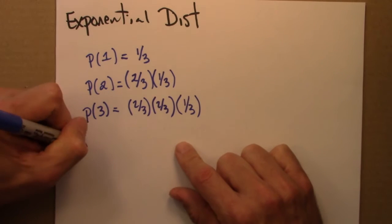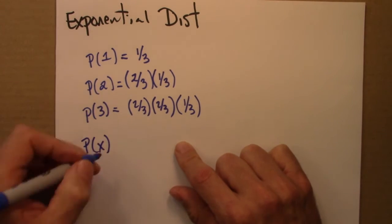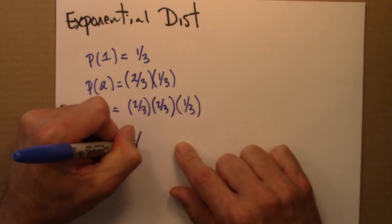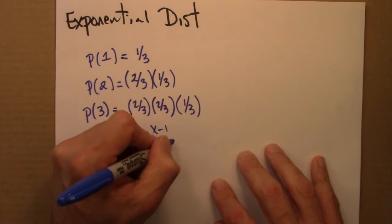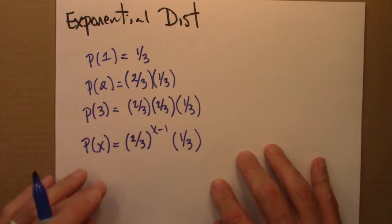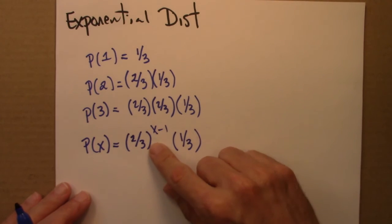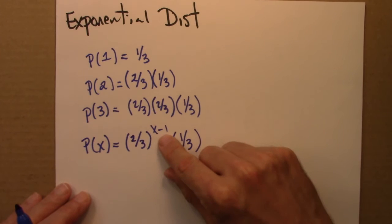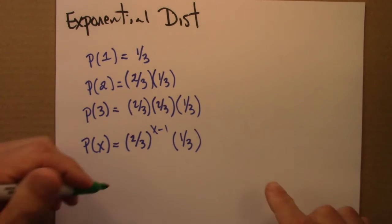And now we can start to see the pattern. The probability that it takes me x throws is going to be two thirds to the x minus one times one third. I need to miss the first x minus one throws and then make the last throw that I make. So this is a type of distribution known as a geometric distribution.